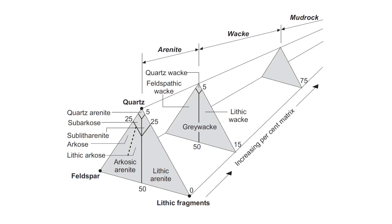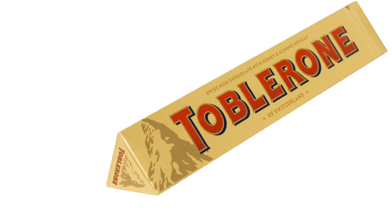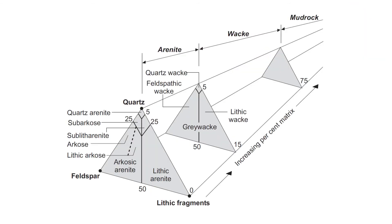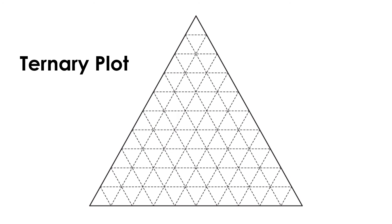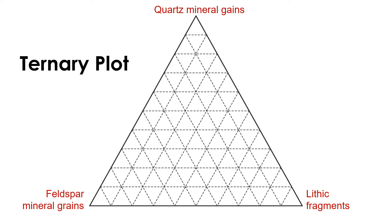One of the most useful classifications of sandstone is called the Pettijohn classification. It might also be helpful to remember it as the Toblerone classification scheme. This classification scheme distinguishes between sandstones based on their percentages of matrix and clasts of various types. It relies on the use of ternary plots — triangular diagrams where each plot graphically depicts the ratio of three variables that sum to a constant. In this case, the variables are the amounts of lithic fragments, quartz mineral grains, and feldspar mineral grains in a sandstone.